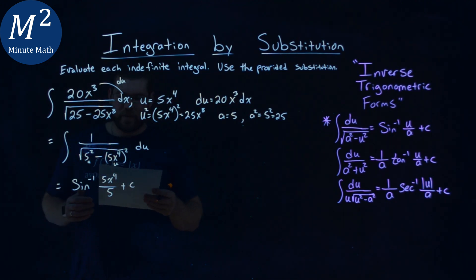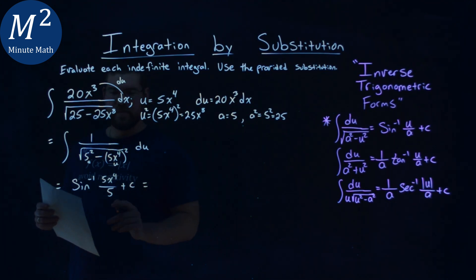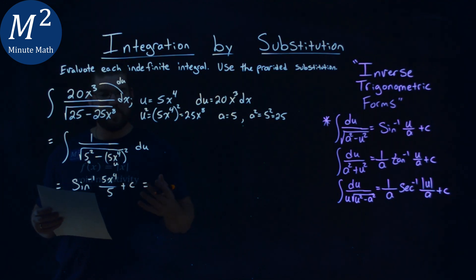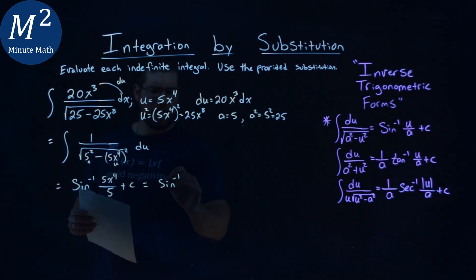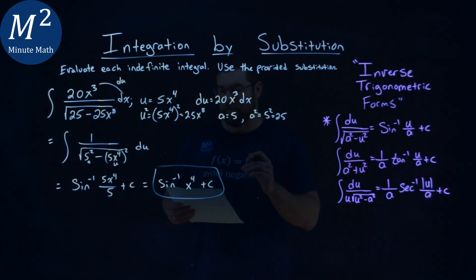Now, we can simplify this slightly more, right? 5 divided by 5, and it simplifies just to be x⁴. Sometimes people just want you to do the first step, and you're done, but we can do that here, we have arc sine of just x⁴ plus c, and that is my final answer.